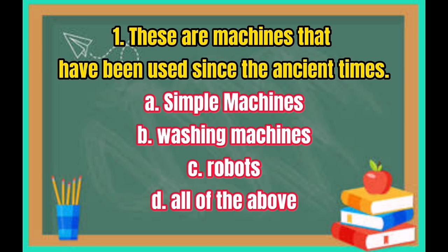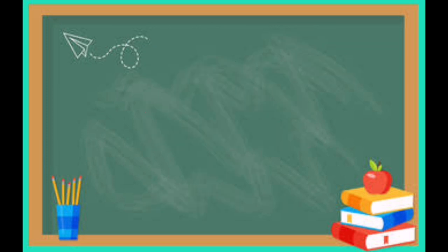Number 1: These are machines that have been used since ancient times. A. Simple machines. B. Washing machines. C. Robots. D. All of the above.